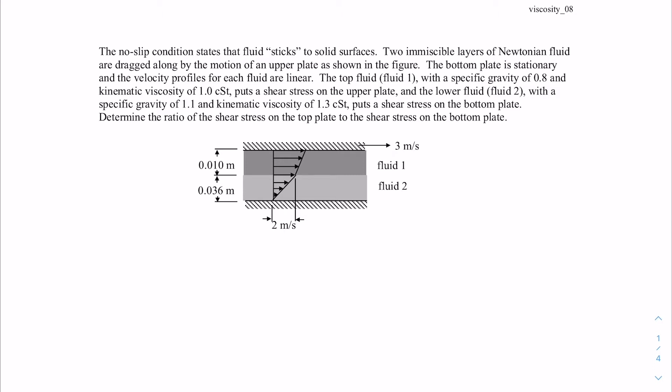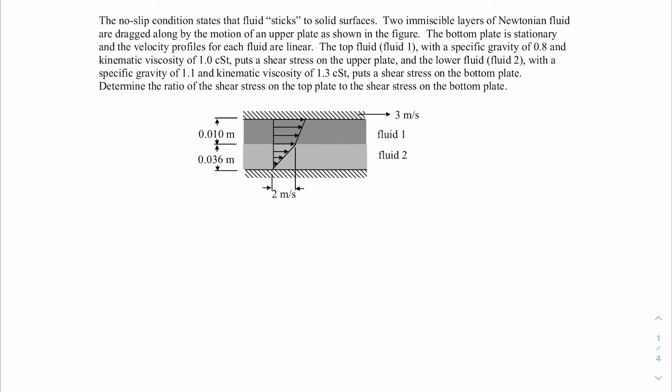These fluids are immiscible, so there is a sharp interface between the two. Since we are moving the upper plate, there is a velocity profile in fluid one and similarly a different velocity profile in fluid two. Both velocity profiles are linear because it is a quiet flow. The velocity at the interface between fluid one and fluid two is given as 2 meters per second. In this problem we are asked to determine the ratio of the shear stress on the top plate to the shear stress on the bottom plate.